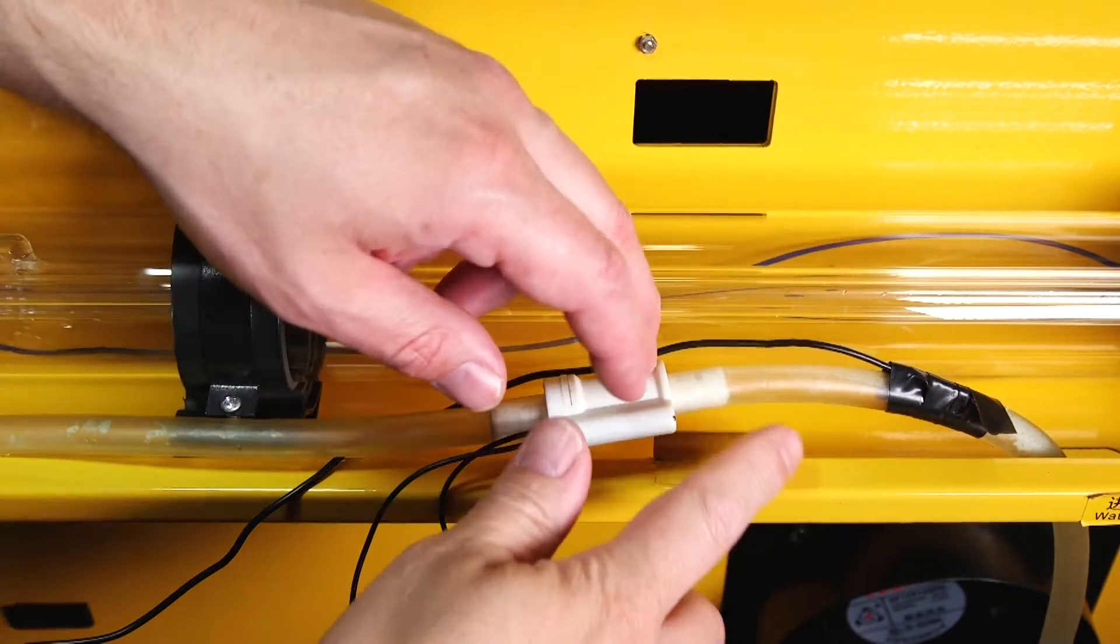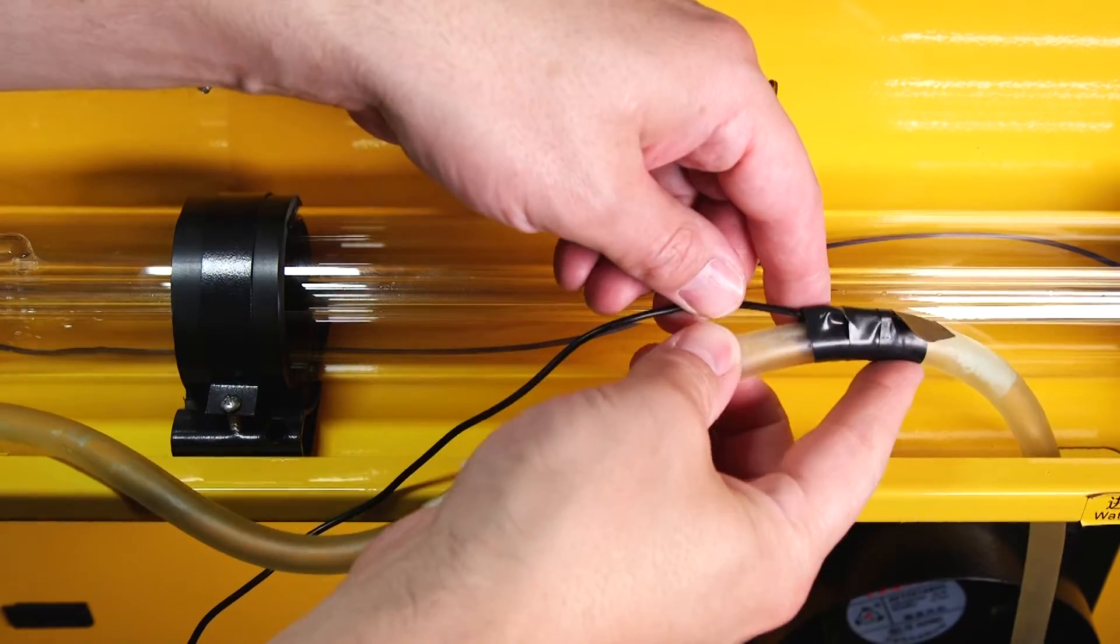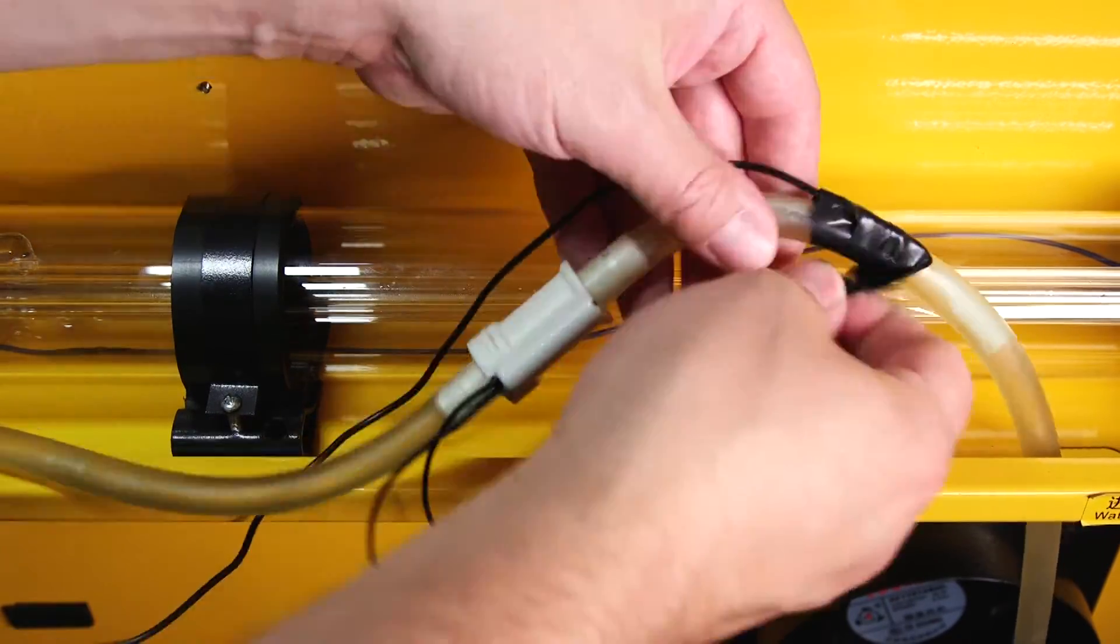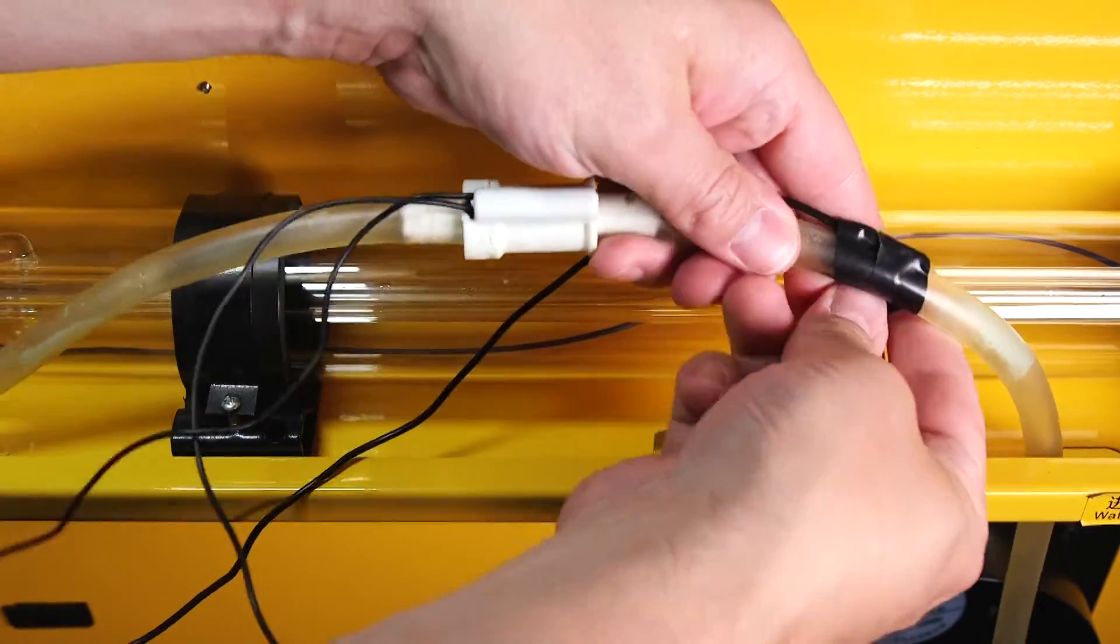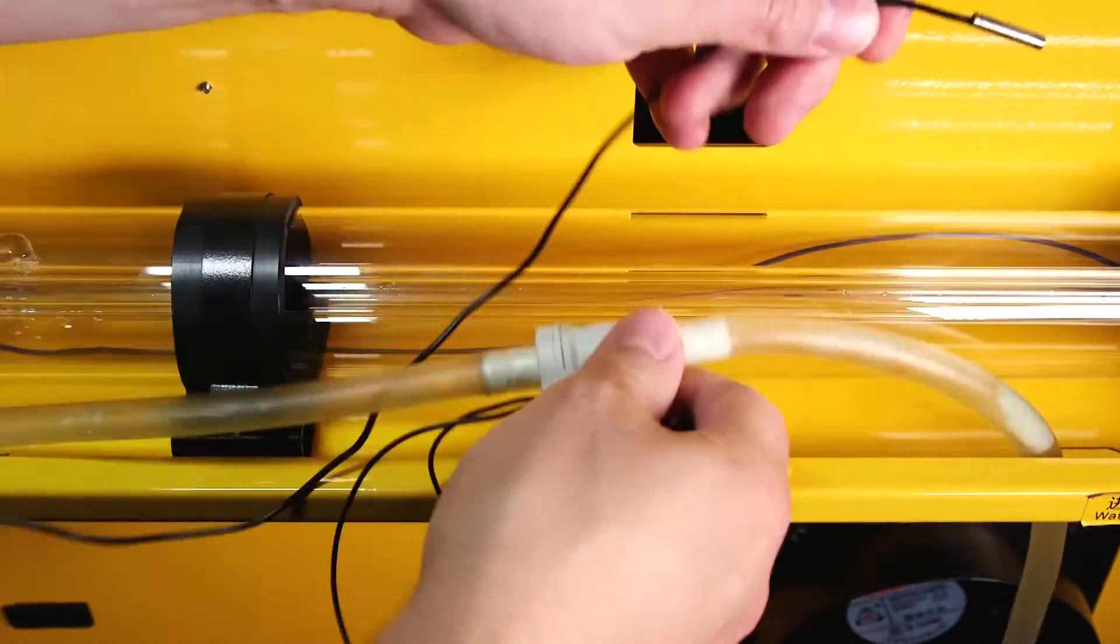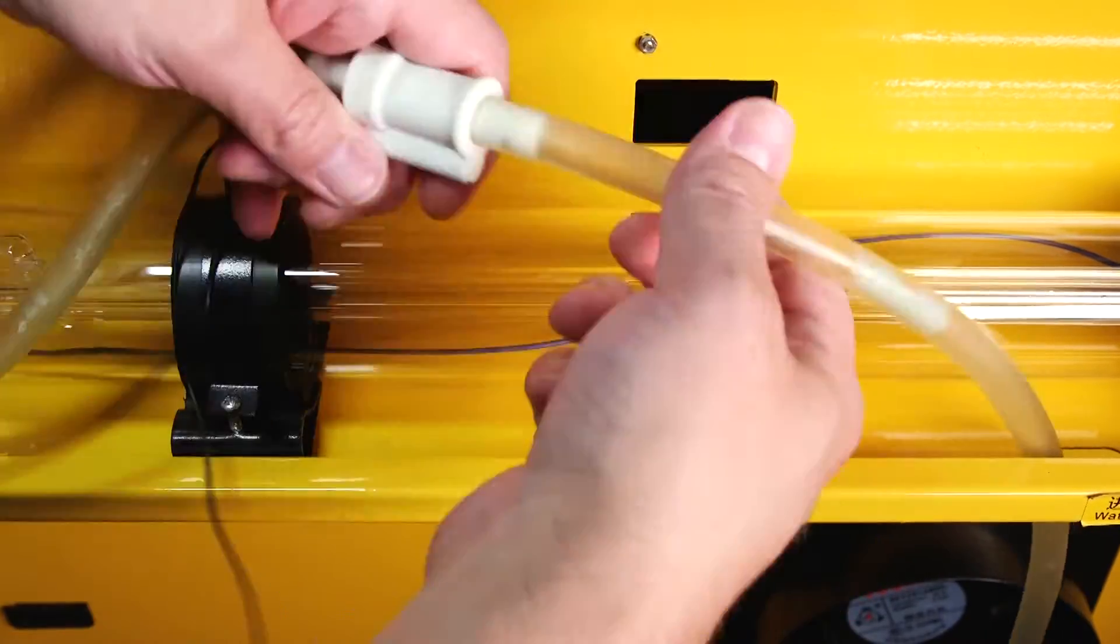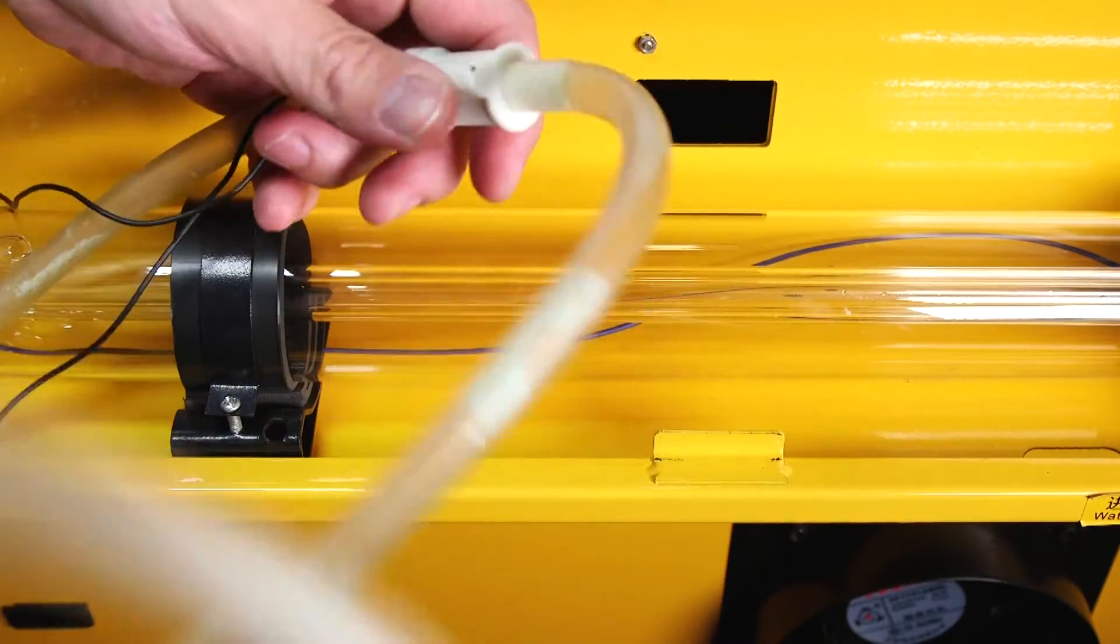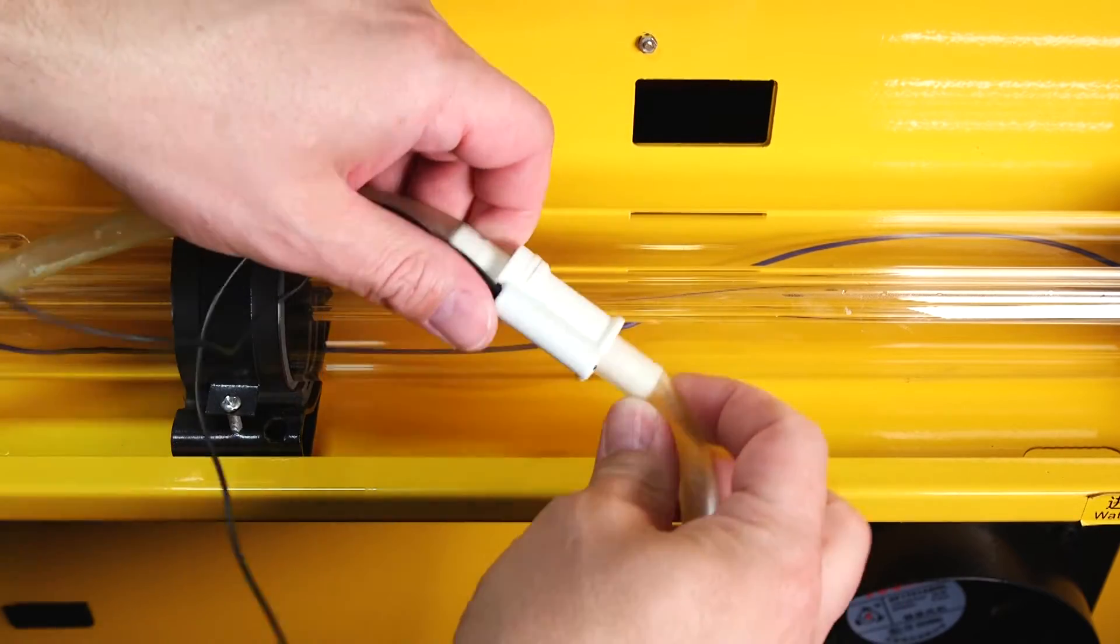Let's start by removing the water flow switch. The first thing I'm going to do is remove the water temperature sensor which is simply attached to the hose with some electrical tape. I'm then going to pull the tubing off both sides of the water flow switch.